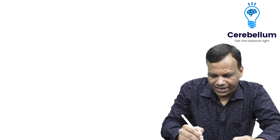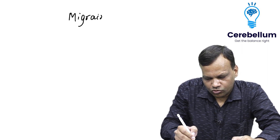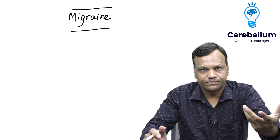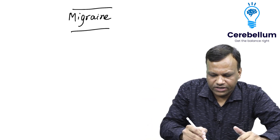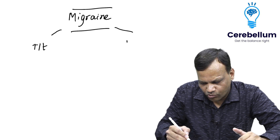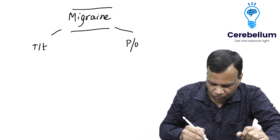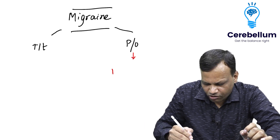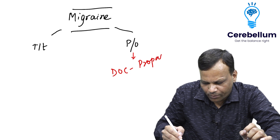So my topic will be migraine. Migraine is a unilateral pulsatile headache. For migraine there are two things: one, we need to treat the migraine; and second, if a person has frequent attacks, we need to prevent it. Regarding prophylaxis, the drug of choice is a beta blocker called propranolol.